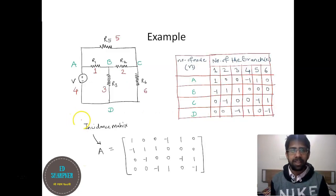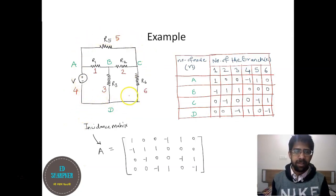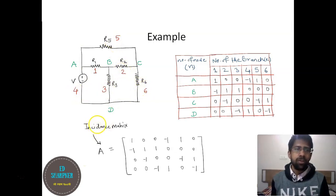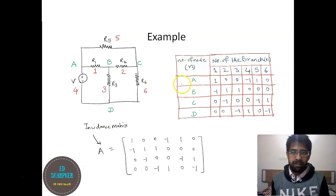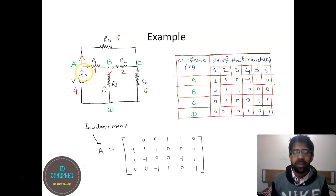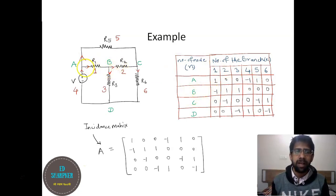Let us quickly see an example. We have a network with a voltage source and five resistors. We have named four nodes A, B, C, and D, and all branches as 1, 2, 3, 4, 5, and 6. For node A: branch 5 is going away (+1), branch 1 is going away (+1), and branch 4 is coming towards it (-1). For node B: branch 1 is coming towards it (-1), and branches 2 and 3 are going away (+1); the rest are zero.